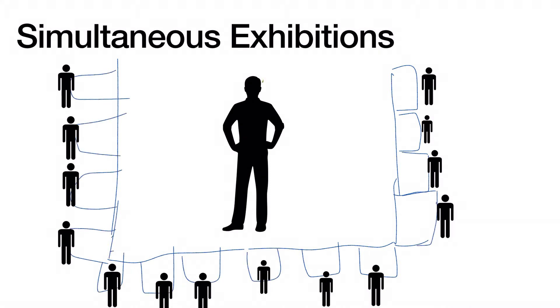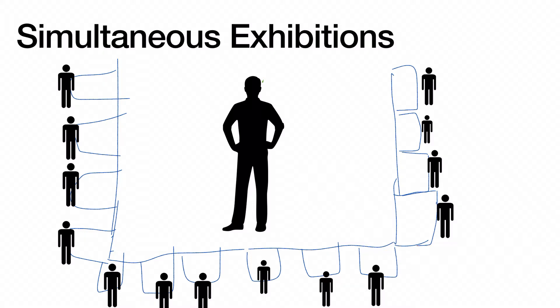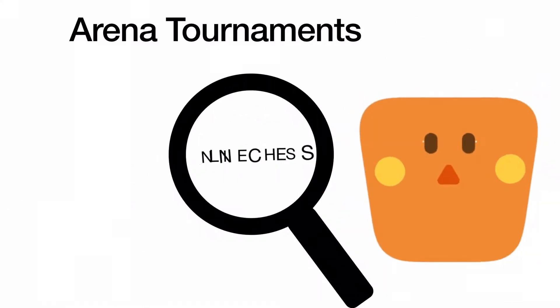The next type is simultaneous exhibitions. Simultaneous exhibitions are basically when a player plays two or more players simultaneously. The person in the middle goes around all the players and plays against all of them. Normally the player in the middle is a really strong grandmaster, and the amateur players are fighting for a draw or win to earn a prize. However, not all exhibitions have prizes — they can also be used for training. Let's move on to the next tournament type: arena tournaments, which are based on online chess, as it would go too crazy in real life.